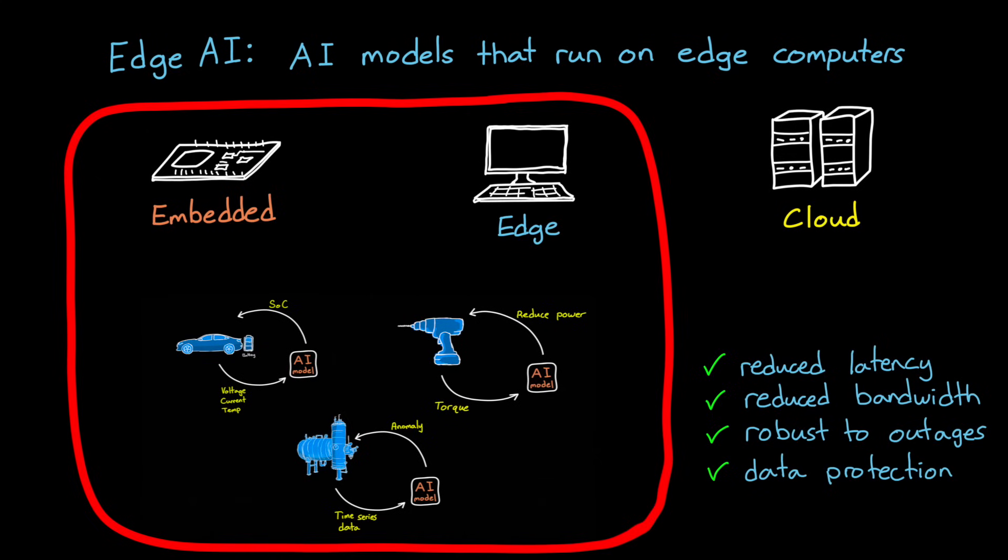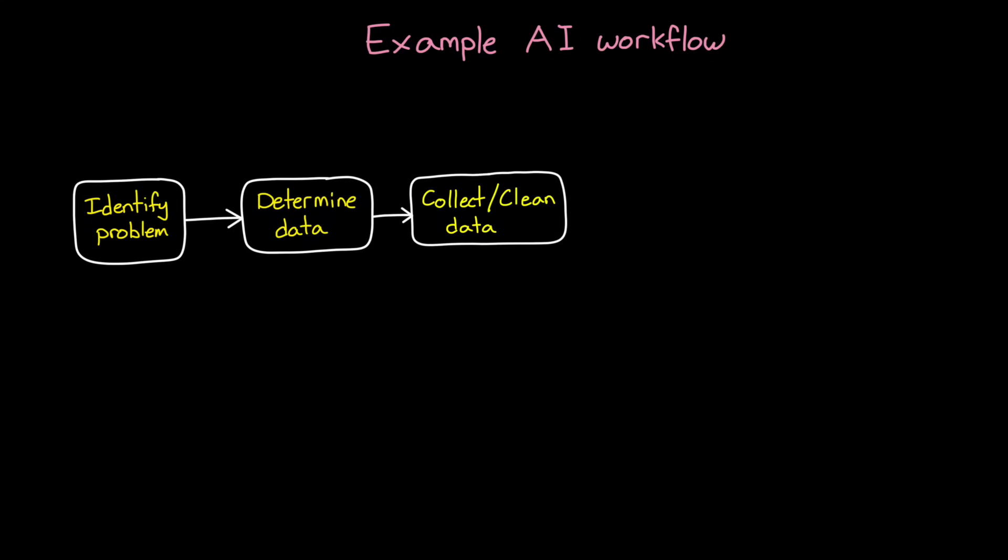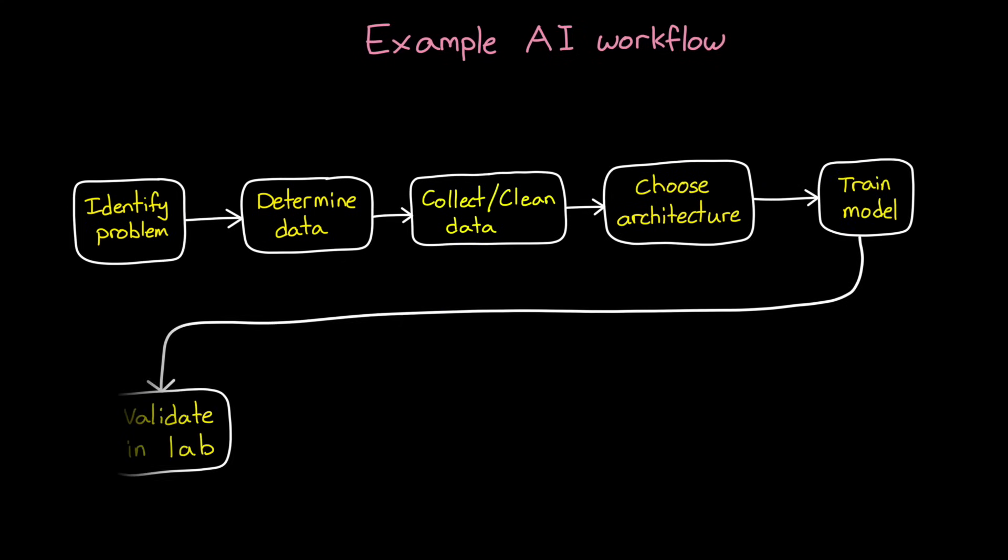Well, in general, the workflow is the same, but the difficult parts of it and where you're spending most of your effort might be different. So let me explain it with an example workflow for supervised learning. To develop an AI model, you start by identifying a problem that you want to solve and, importantly, are able to solve with AI. You determine what type of data you need to solve this problem and then collect and clean a large training dataset. You choose a model architecture and train the model to maximize accuracy. And then you use that model to classify unseen data to validate that the algorithm is working, at least in a lab setting.